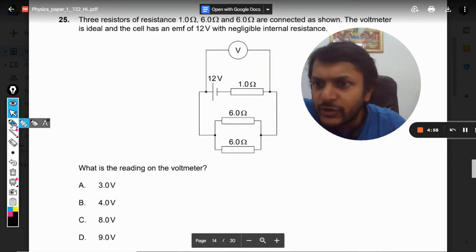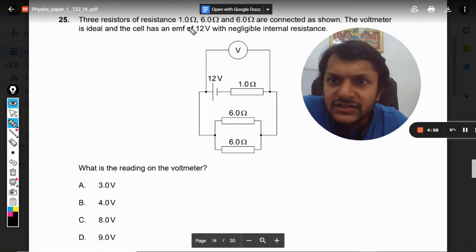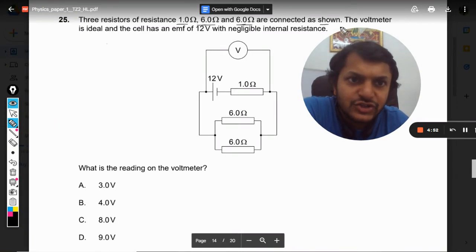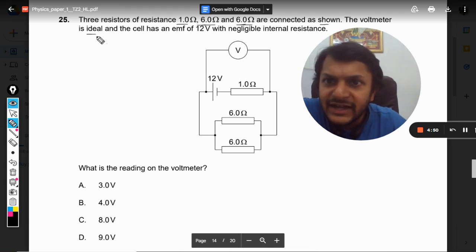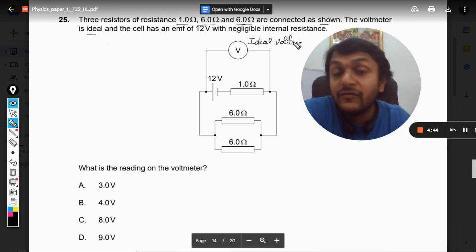Okay dear students, let us see what is there. Three resistors of resistances 1 ohm, 6 ohm, and 6 ohm are connected as shown. The voltmeter is ideal, so ideal voltmeter has a meaning. Now what is that ideal voltmeter?